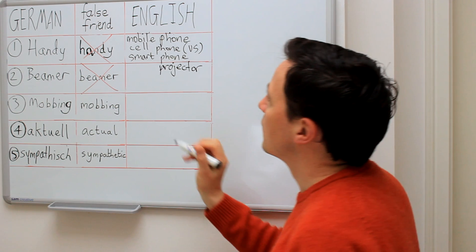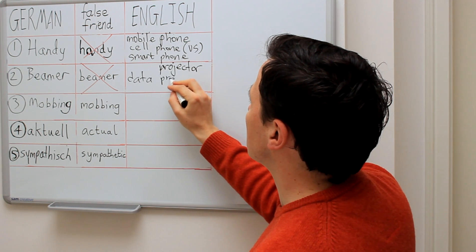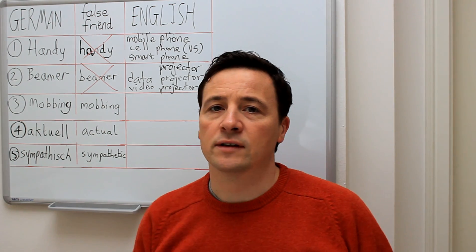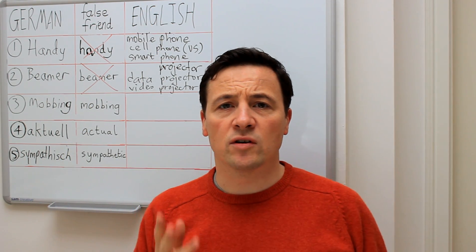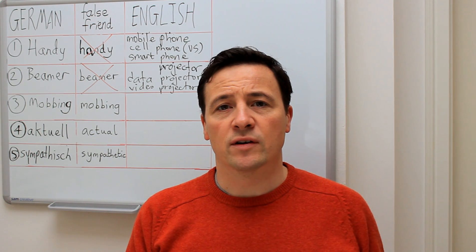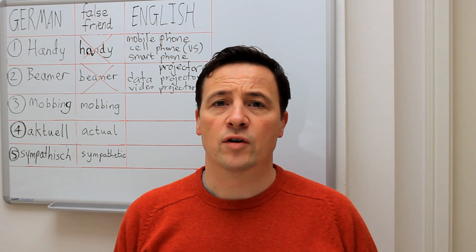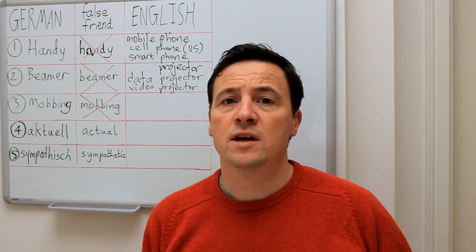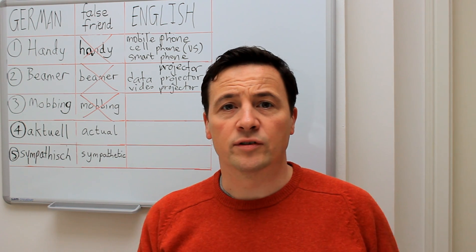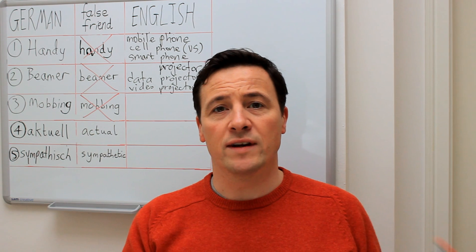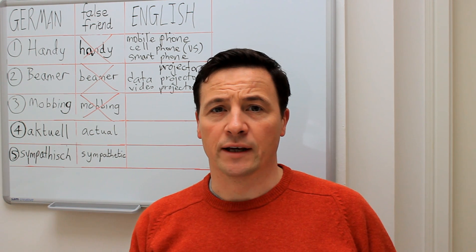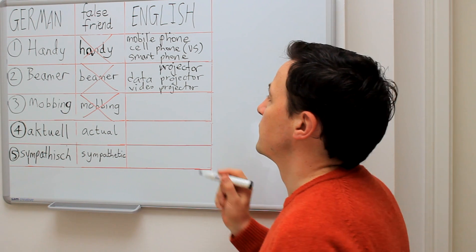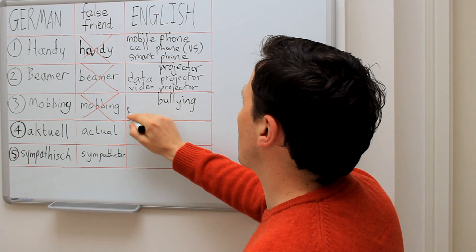The correct English words are projector, data projector, video projector, or even overhead projector. A third typical false friend that German speakers sometimes use in English is the word 'mobbing'. Mobbing in German is not mobbing in English — there is actually no word 'mobbing' in English. There is a verb 'to mob' or 'to be mobbed' but it means something a little different and is not so negative. The word 'mobbing' in German translates to bullying in English, or if it's happening at work, workplace bullying.